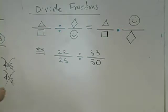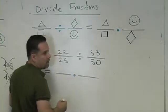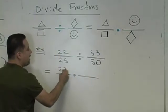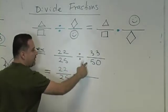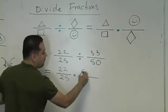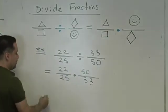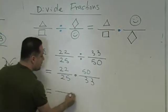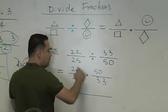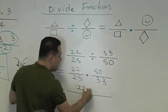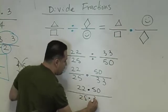What would you do? Keep the first fraction the same. The reciprocal of the second fraction — 33 over 50 becomes 50 over 33 — and now change your division to multiplication. So this becomes a multiplication problem. How do you multiply? Straight across: 22 times 50 over 25 times 33. But don't multiply yet.